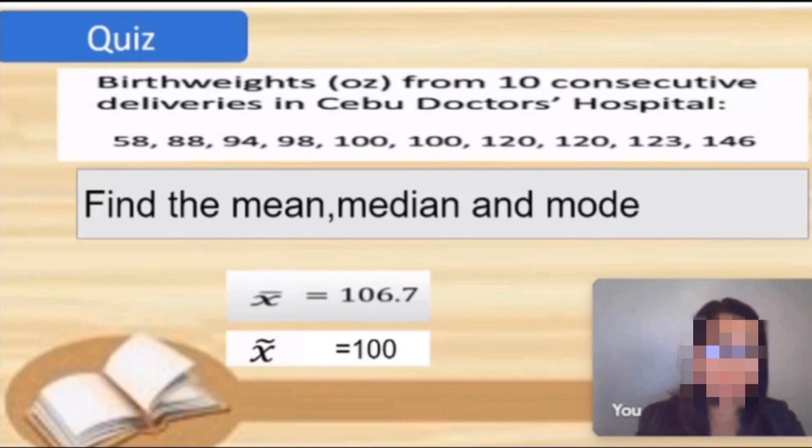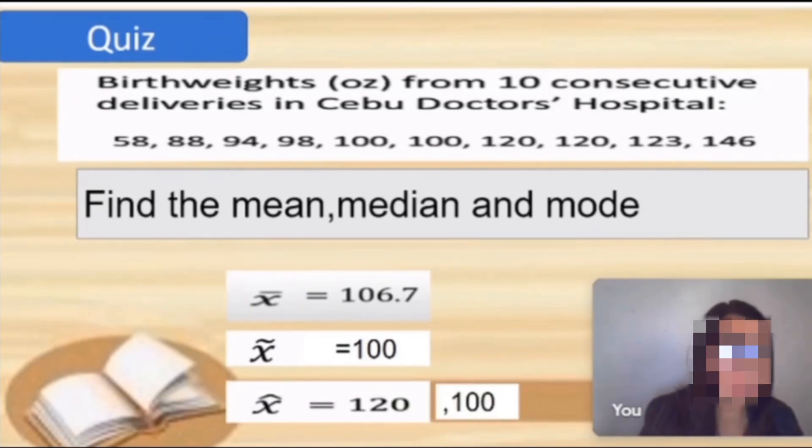Next, what is our mode? We have two modes: 100 and 120. We call that bimodal. Thank you so much.